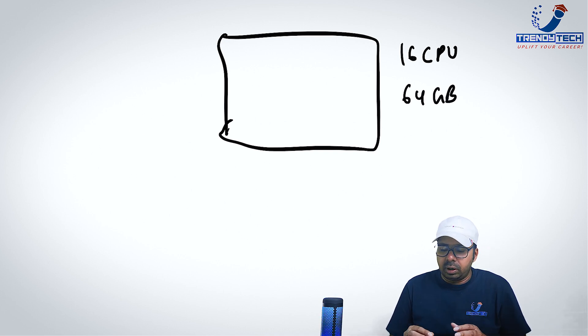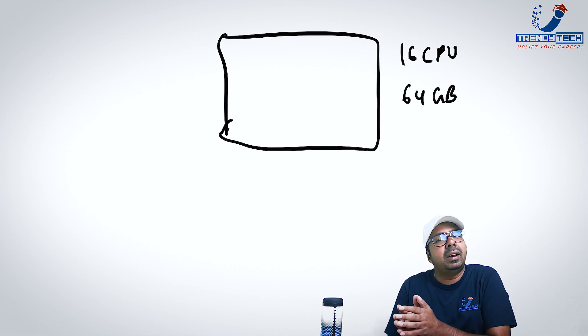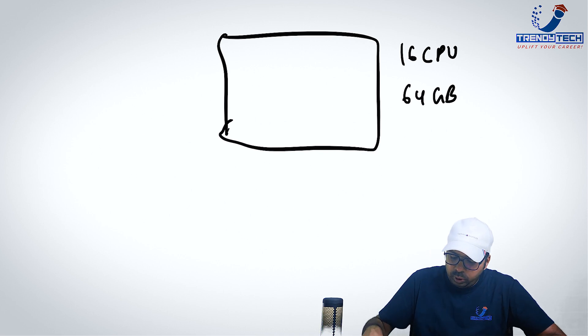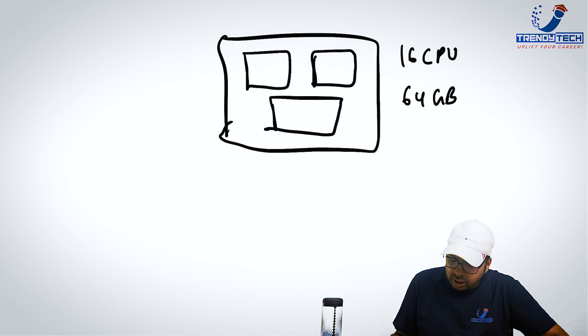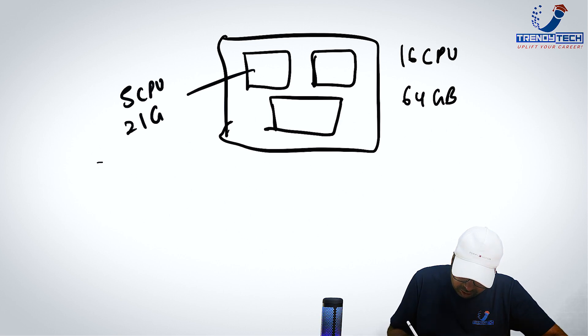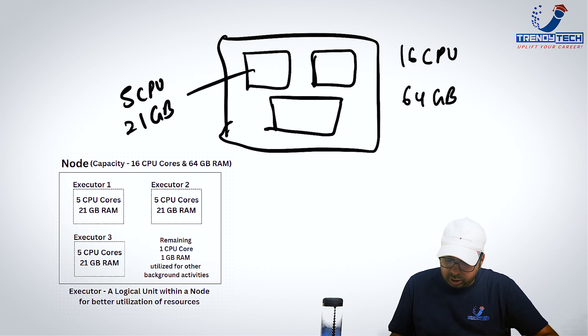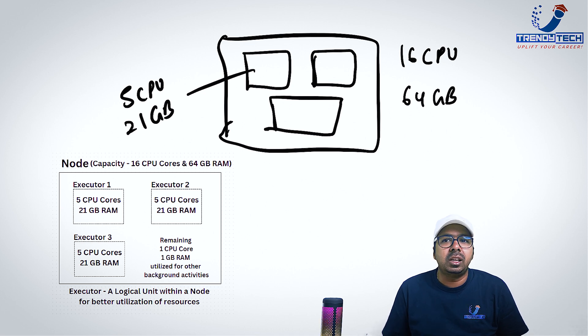Now inside this, multiple containers are created. So we can, let's say, create three containers. And each container, we can give around, let's say, five CPU cores, 21 GB RAM. So that total would be 15 CPU cores and 63 GB RAM we will use. One CPU core and one GB RAM we will go for some background processes.